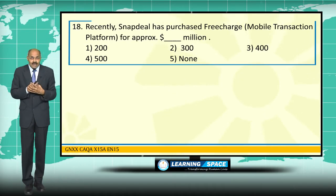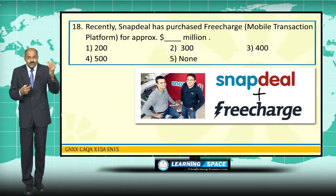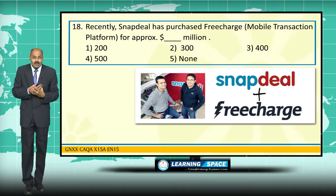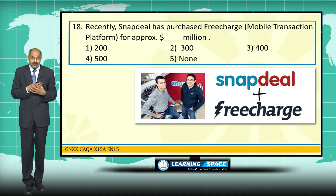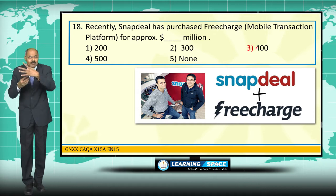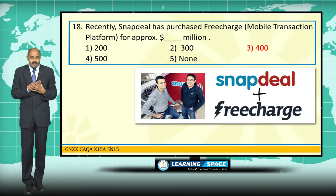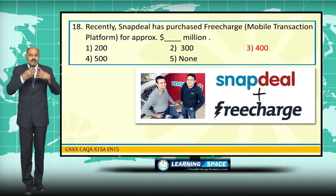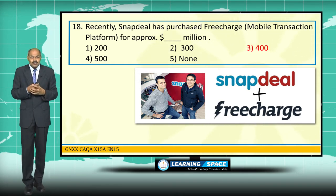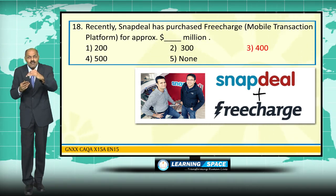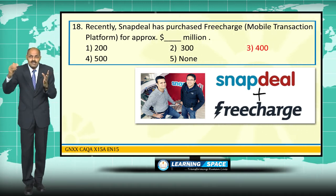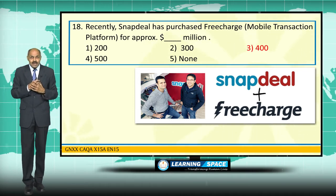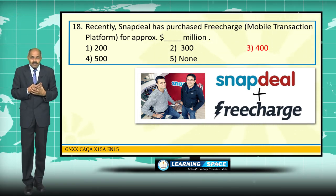Snapdeal has purchased FreeCharge, a mobile transaction platform, for 400 million dollars. The CEO of Snapdeal is Kunal Behal, and the founders are Kunal Behal and Rohit Bansal. FreeCharge's user base is primarily the 17-to-30 age group, and by purchasing it, Snapdeal will gain access to a younger demographic and diversify its e-commerce platform.